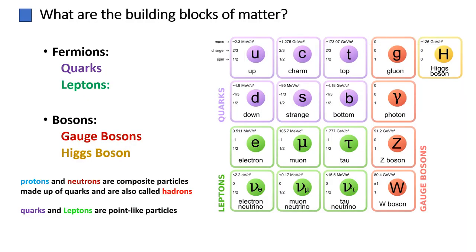At the most fundamental level, matter is composed of elementary particles. These particles are considered the building blocks of matter. In the standard model of particle physics, there are two main categories of elementary particles: fermions and bosons.